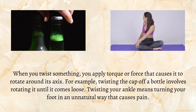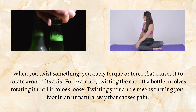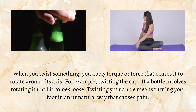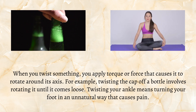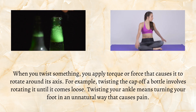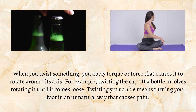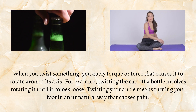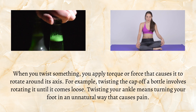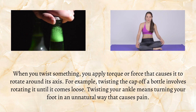When you twist something, you apply torque or force that causes it to rotate around its axis. For example, twisting the cap of a bottle involves rotating it until it comes loose. Twisting your ankle means turning your foot in an unnatural way that causes pain.